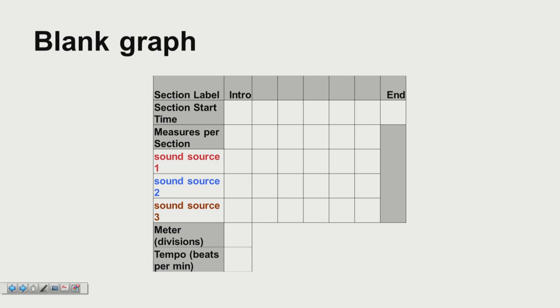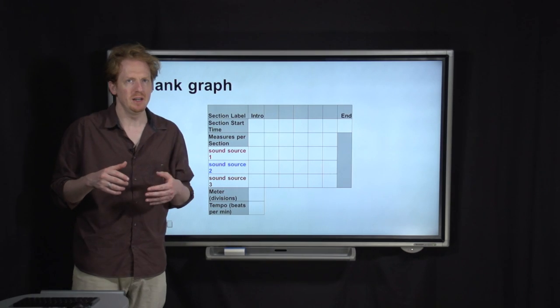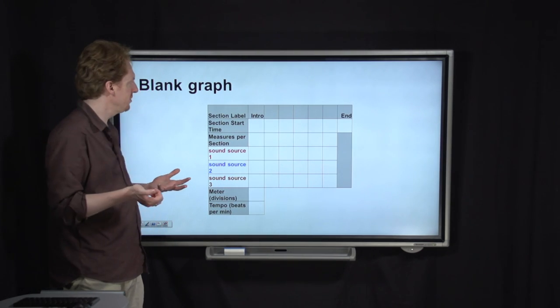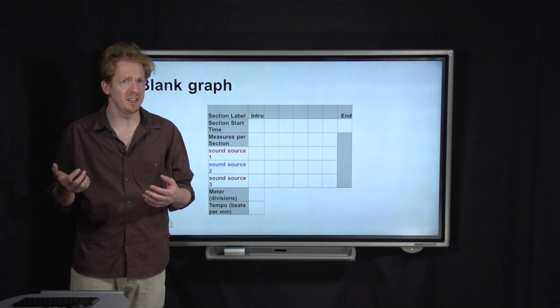A row for the number of measures long that each section is. And then a row for each of the sound sources. Those might include things like guitar, bass, drums, vocals, et cetera. Finally, we've got boxes for the meter and the tempo. So the meter is the number of beats in each measure.